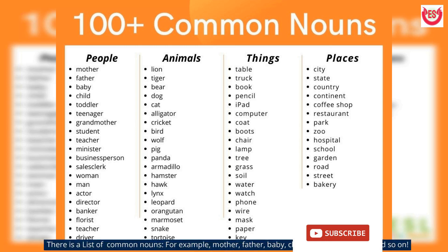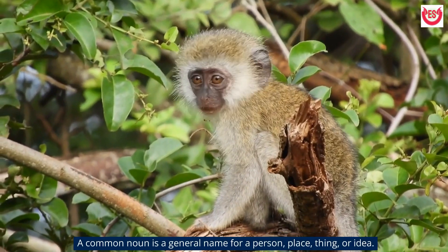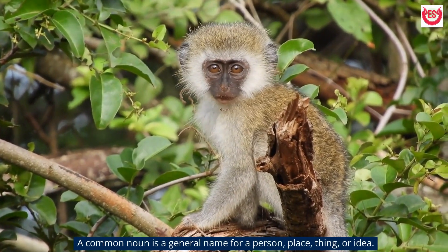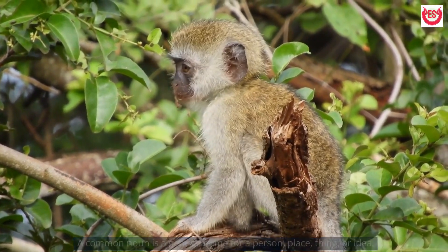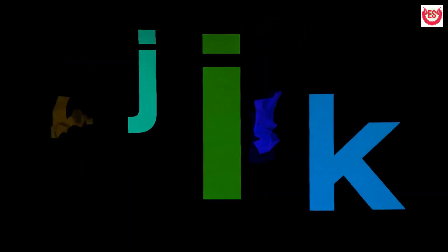There is a list of common nouns, for example: mother, father, baby, child, toddler, teenager, and so on. A common noun is a general name for a person, place, thing, or idea. It is not capitalized unless it appears at the beginning of a sentence.